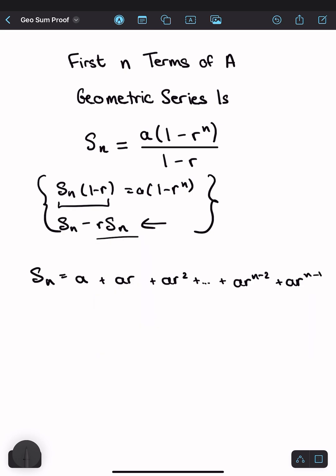Now I need to write the sum S_n multiplied by r. So rS_n equals ar plus ar squared plus ar cubed and so on. The second last term is now ar to the n minus 1 plus ar to the n.